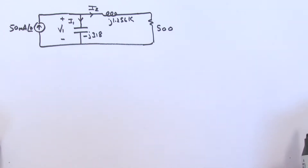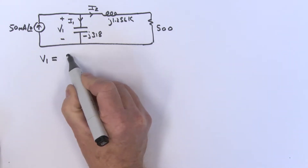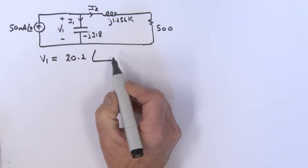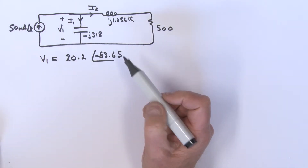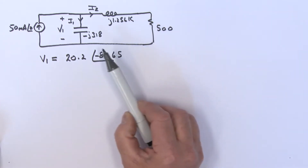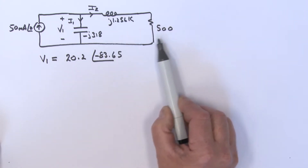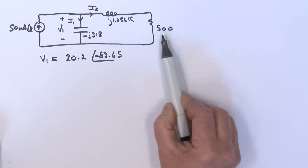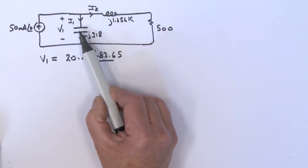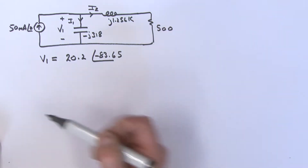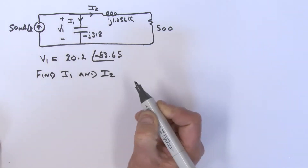From the last video we know that v1 is equal to 20.2 at an angle of minus 83.65. Now what we're going to do is calculate the reactive power in the capacitor, reactive power in the inductor, and the real power dissipation in the resistor. To do that, we're going to find i1 and i2 — that's the key to this.